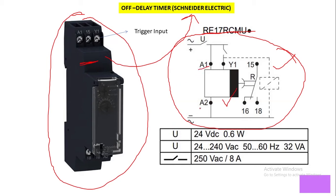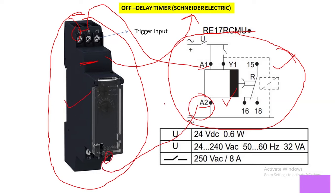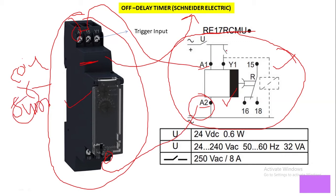As per the diagram, A1 and A2 — here is A1 and this is A2 terminal of this off-delay timer. These are the coil supply terminals, the timer coil supply terminals. Here we have a NO contact through which we give a trigger input signal.